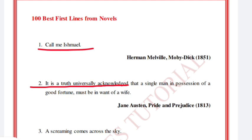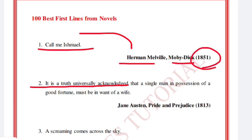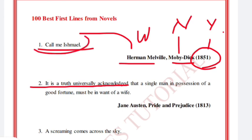For example, 'Call me Ishmael' is just a short line. From this you can identify it's Herman Melville's work, published in 1851. So three things you will remember: which novel it is, which writer it is, and when it was published — the publication year.